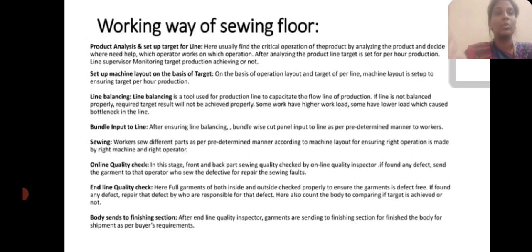Line balancing is a tool used in the production line to maintain the capability of the production flow. If the line is not balanced properly, the target result will not be achieved properly. After ensuring line balancing, bundles of cut pieces are input into the line in a determined manner.